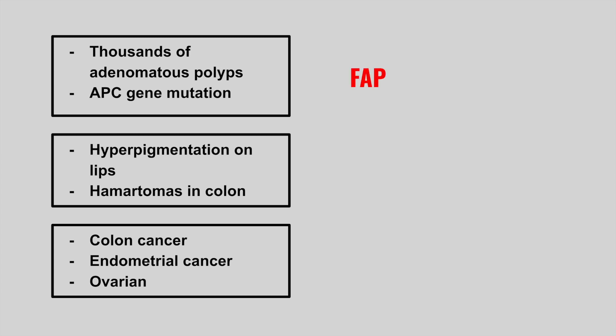The next patient has thousands of adenomatous polyps and an APC gene mutation — this is familial adenomatous polyposis, FAP. It's an autosomal dominant genetic condition with lots of polyps in the colon that greatly increases the risk of colon cancer. The next patient has hyperpigmentation on the lips and hamartomas in the colon — this is Peutz-Jeghers syndrome. They often show a picture of hyperpigmented spots on the lips or in the mouth.